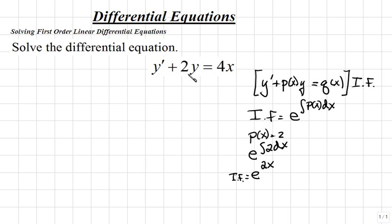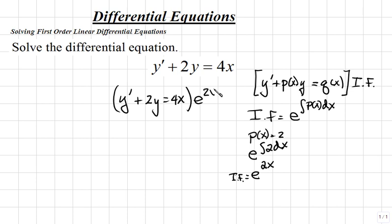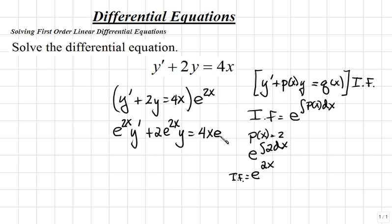So let's multiply both sides of our differential equation by this integrating factor. We'll first write down the problem: y prime plus 2y equals 4x, and then multiply both sides by e to the 2x. Distributing e to the 2x to each term, we get e to the 2x times y prime plus 2e to the 2x times y is equal to 4x times e to the 2x.